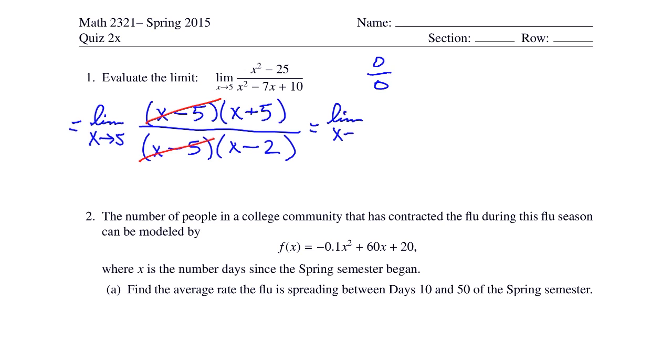Rewrite the limit as x goes to 5 of x plus 5 over x minus 2. Now we can evaluate the limit by plugging in x equals 5, and we get 10 over 3.